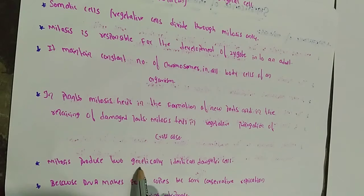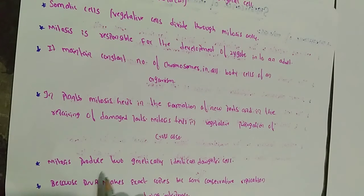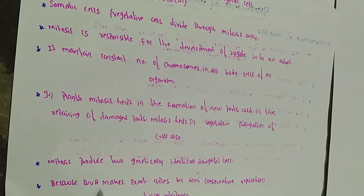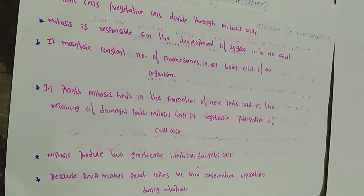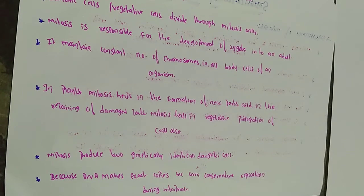Mitosis produces two genetically identical daughter cells because DNA makes exact copies by semi-conservative replication during interphase. Semi-conservative replication means two exact copies of the original DNA molecules are made, each copy containing one original strand and one newly synthesized strand. So the daughter cells are similar to each other.